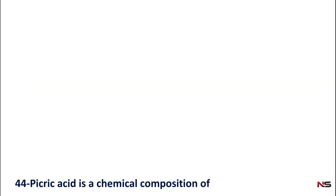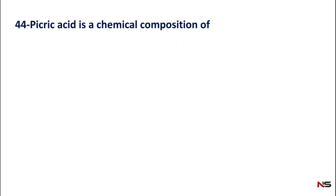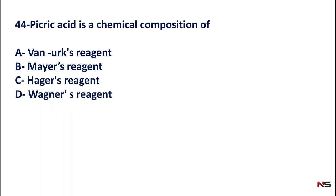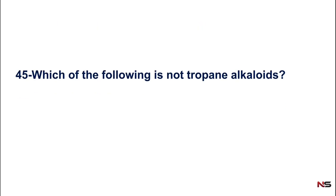Question 44: Picric acid is the chemical composition of which reagent? Options include Vanurk's reagent, Mayer's reagent, Hager's reagent, and Gland's reagent. The correct answer is Hager's reagent — option C. Picric acid is the chemical composition of Hager's reagent.